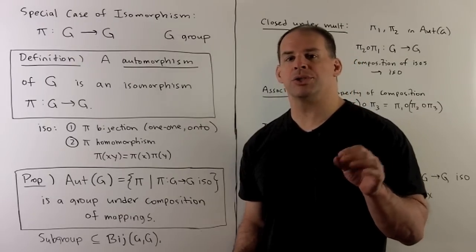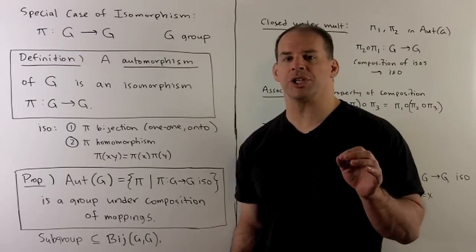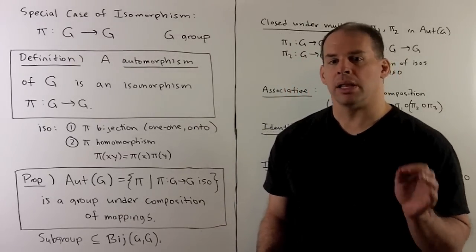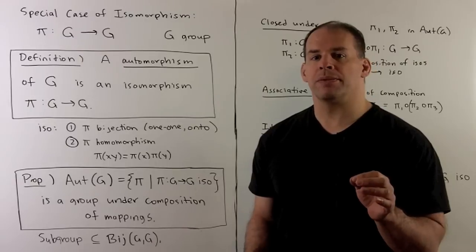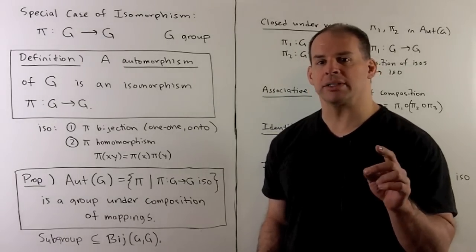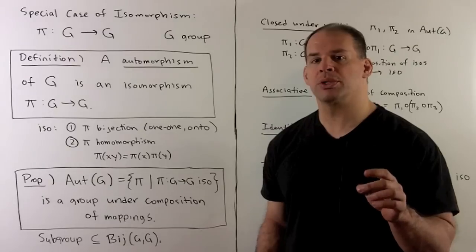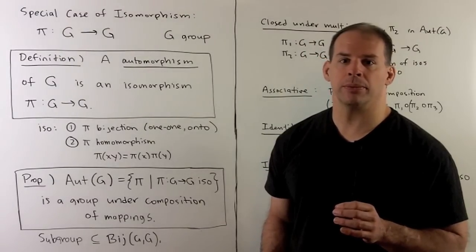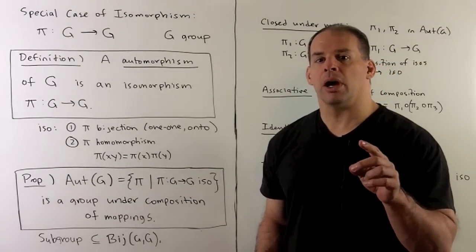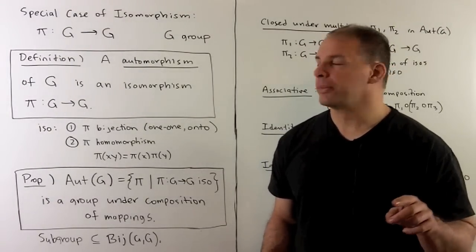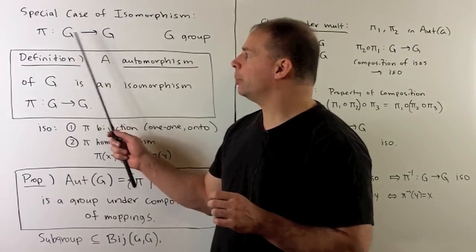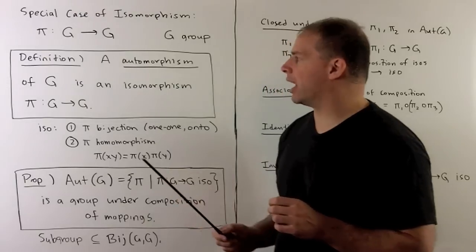Now that we have a partial answer to our second question — whether one or two groups are equal — let's use isomorphism to return to our first question: constructing new groups from old groups. We consider a new type of isomorphism: isomorphisms that carry our group back to itself.